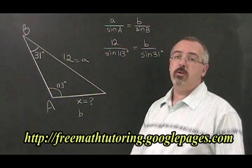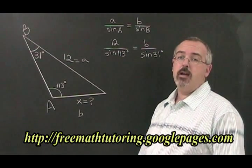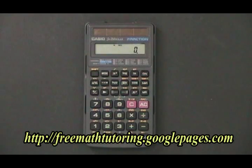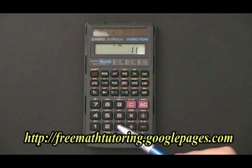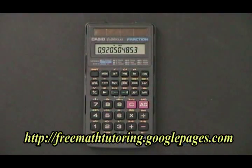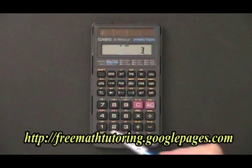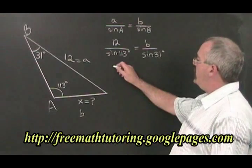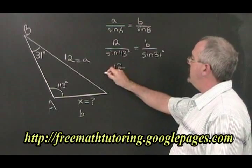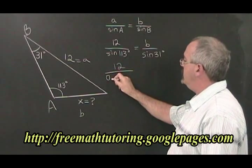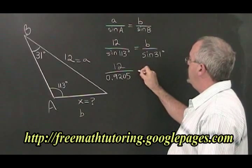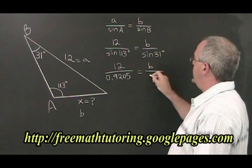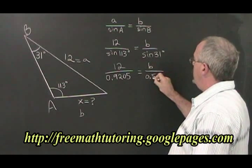The next thing to do is to find the values of sine A and sine B in our calculator. The sine of 113 degrees is equal to 0.9205. The sine of 31 degrees is equal to 0.5150. Our formula can be rewritten like this: 12 over 0.9205 is equal to b over 0.5150.